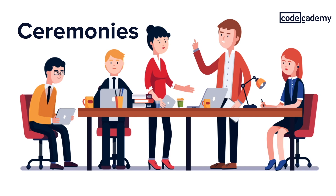Now that we've gotten all our definitions out of the way, I'm going to go over how they all interact with each other, and that's through ceremonies. Ceremonies are just meetings that are held on a regular basis throughout the sprint. The overall purpose of these meetings is to make sure that the team is on track for meeting their goals.